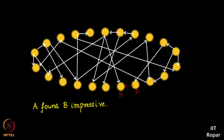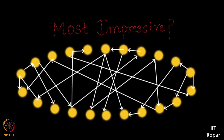If A finds B impressive, B may not find A impressive. Now my question is: how do you find the most impressive person here in this network? An obvious answer is to look at the person who has a lot of arrows coming in — meaning many people found them impressive. But the number of people finding someone impressive should not be an indication of how impressive a person is.